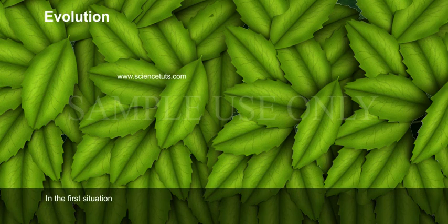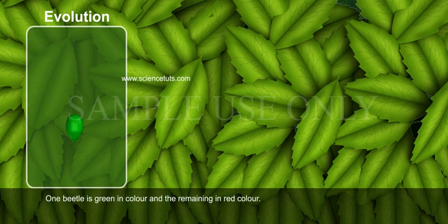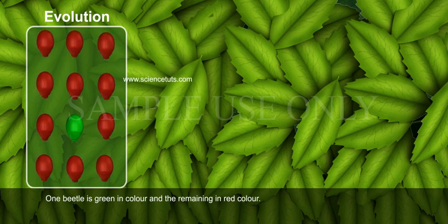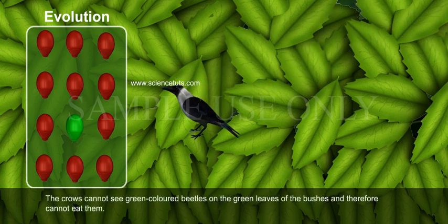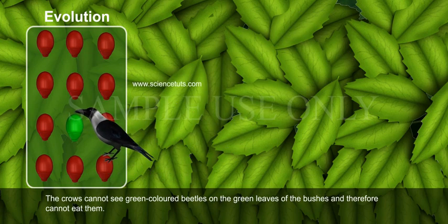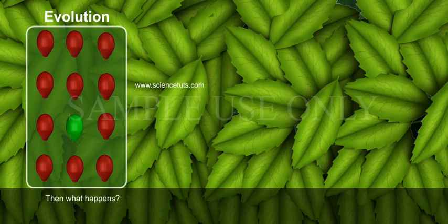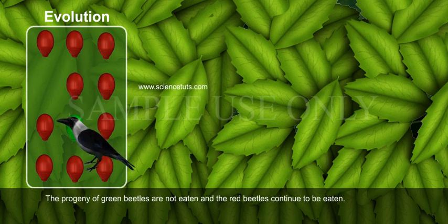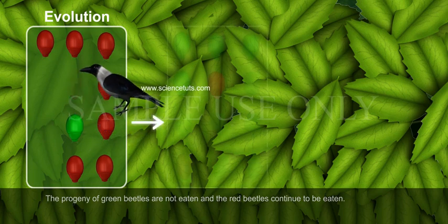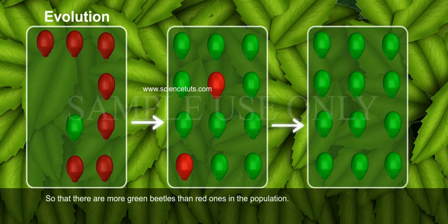In the first situation, due to color variation raised during reproduction, one beetle is green in color and the remaining are red. The green beetle can inherit the same color to its progeny, so the progeny beetles are green. The crow cannot see green colored beetles on the green leaves of the bushes and therefore cannot eat them. The progeny of green beetles are not eaten while red beetles continue to be eaten, so there are more green beetles than red ones in the population.